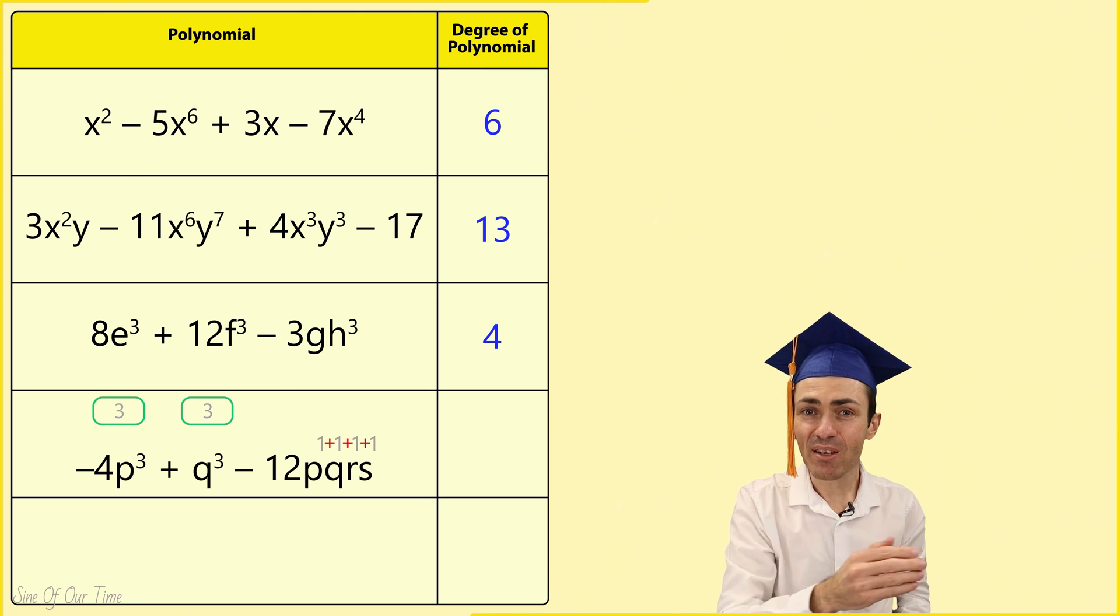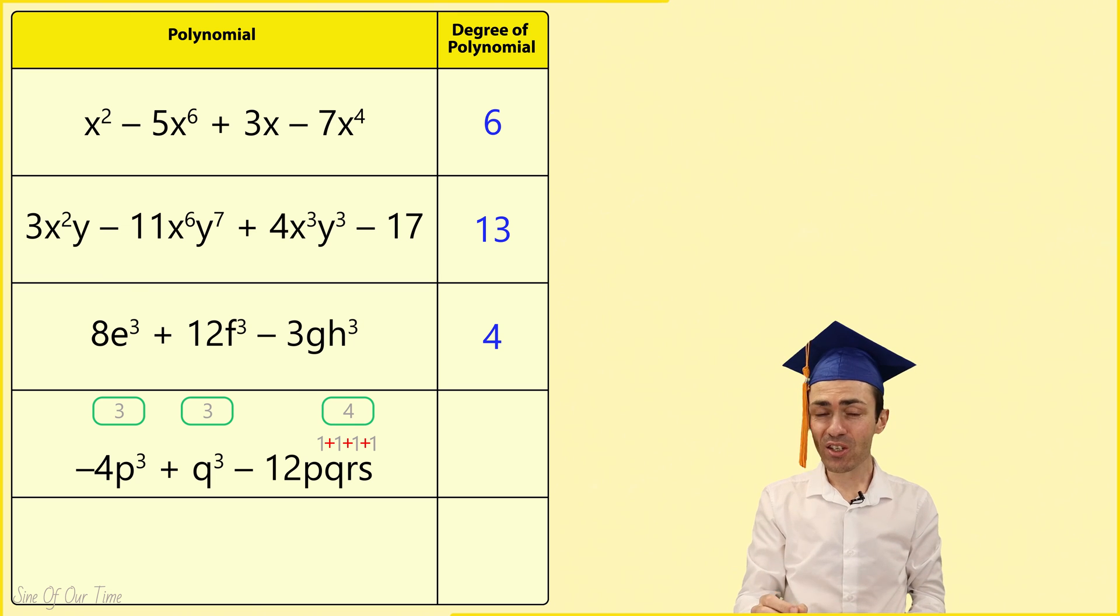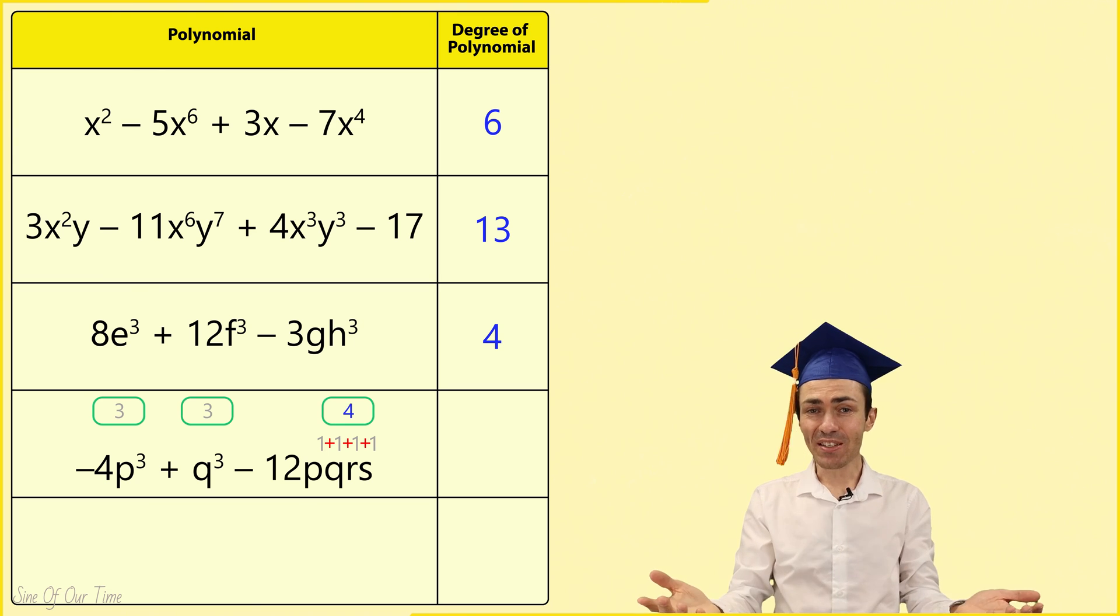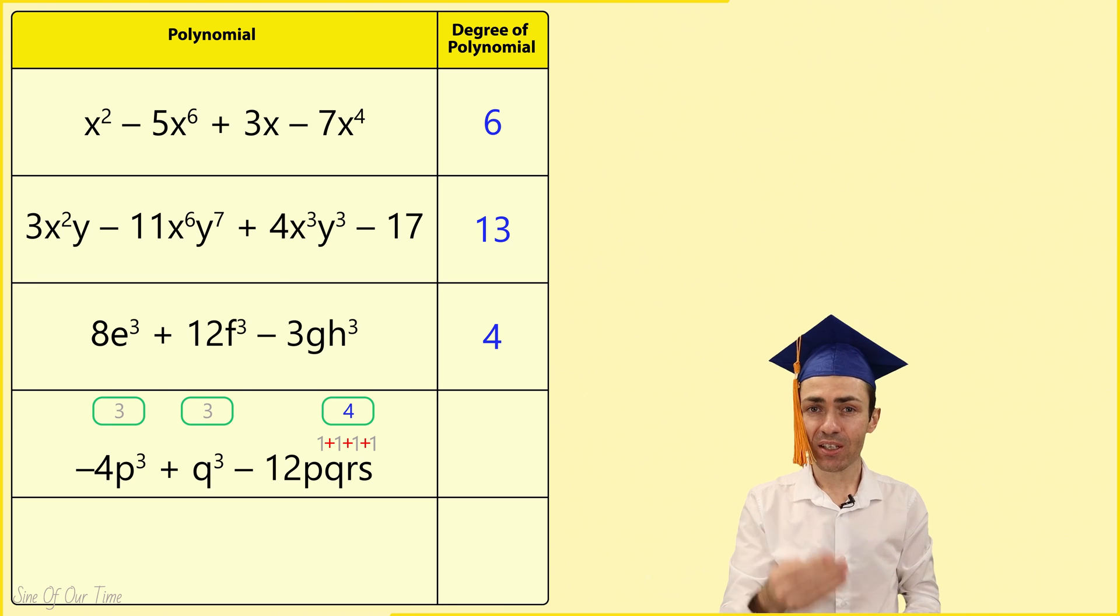1 plus 1 plus 1 plus 1 gives us 4. So actually the degree of the third term is the highest degree, which means that the degree of this polynomial is 4.